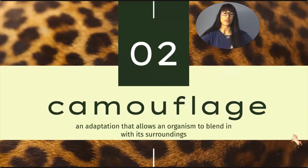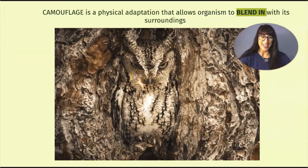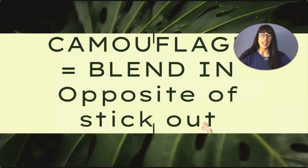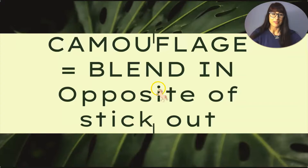Now let's look at camouflage. Camouflage is an adaptation that allows an organism to blend in with its surroundings. Here we have a picture of an owl — it's really hard to see where the owl is, and that's exactly what they want. Camouflage is a physical adaptation because it's the color of their body that allows them to blend in. Remember: the key word for camouflage is blend in, which is the opposite of stick out.